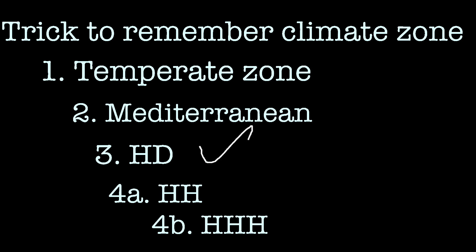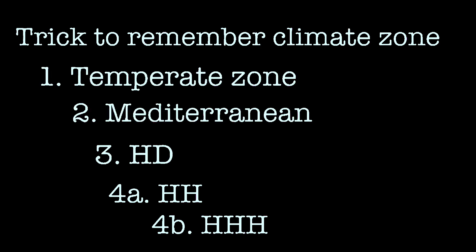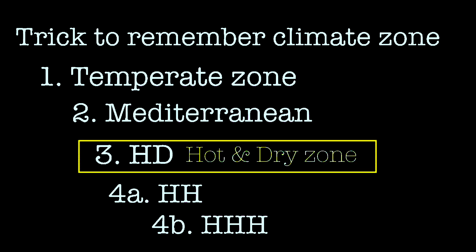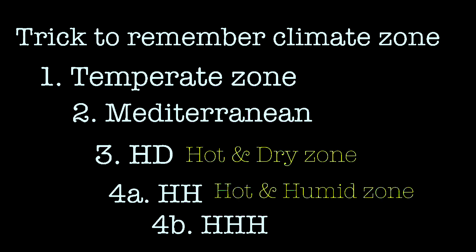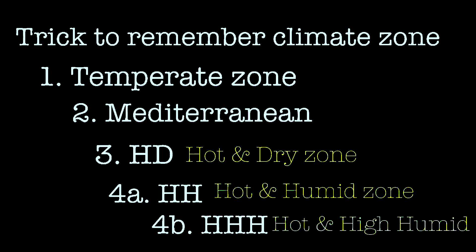So the shortcuts are: HD for zone 3, double H for zone 4A, and triple H for zone 4B. By simply remembering 'temperate zone' you can decode all zones: T for temperate, M for Mediterranean, HD meaning hot and dry (zone 3), double H meaning hot and humid (zone 4A), and triple H meaning hot and high humid (zone 4B). This is the shortcut to remember all the stability climatic zones.